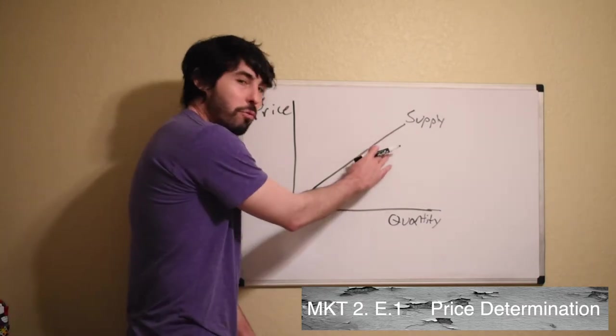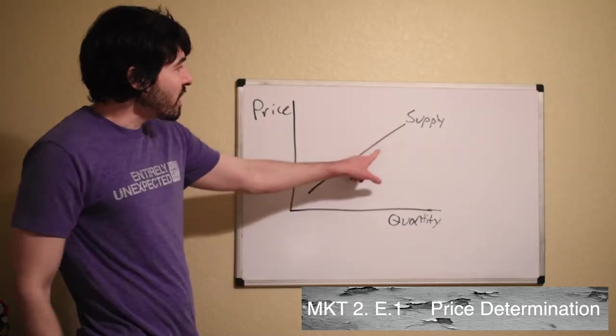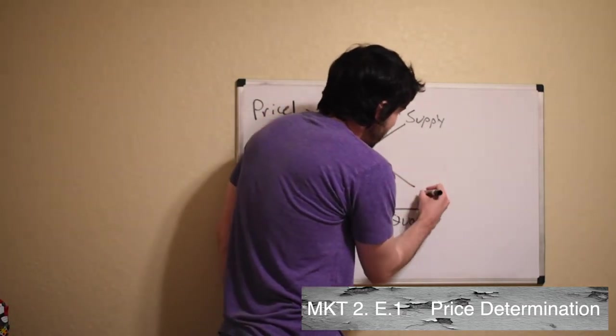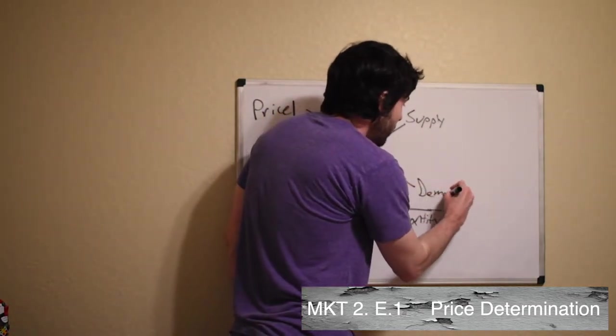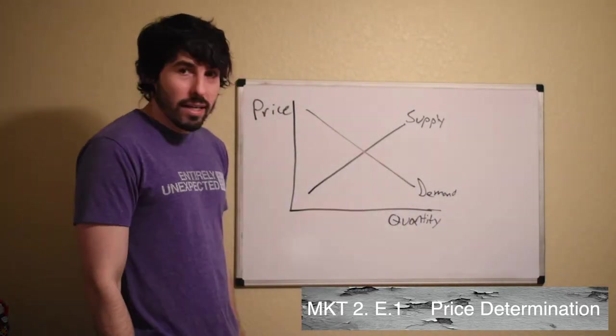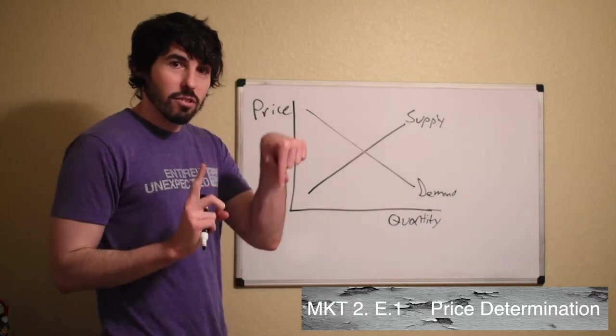So as price goes up, they're more likely to want to make whatever it is that they have because there's a chance to earn more money at the moment. Demand is a little bit different. Demand is downward sloping because the law of demand states that price and quantity demanded are inversely related.